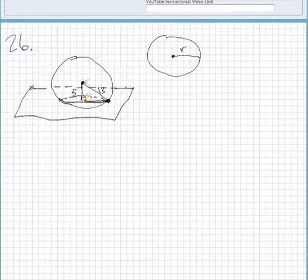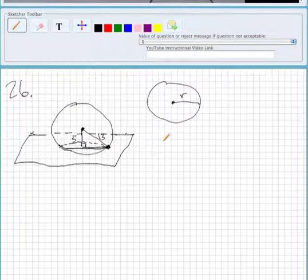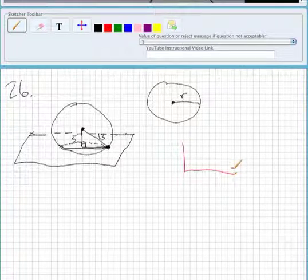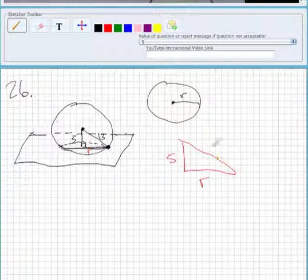And what we get is this triangle right here. So if I write this triangle on the side, this is the distance away from the center of the sphere to the circle. This is the radius on the circle, right here. And then 13 is the hypotenuse, and it's right there.